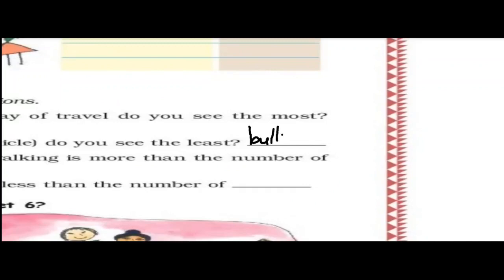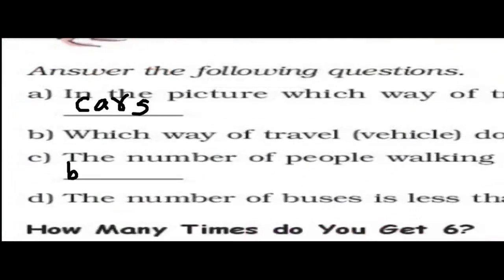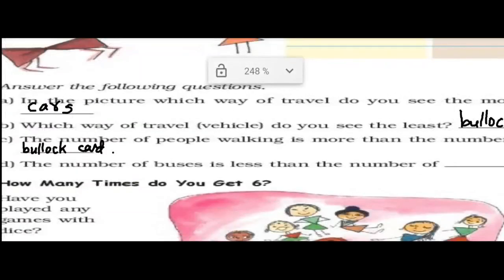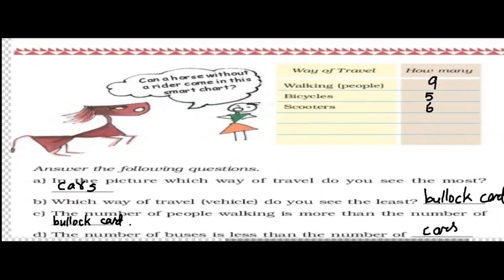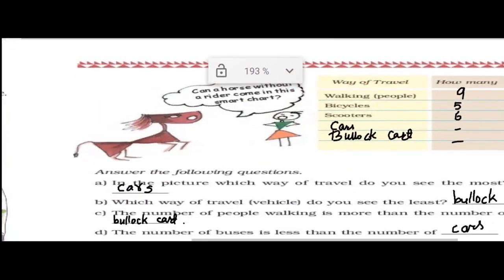Bullock cart. Next, the number of people walking is more than the number of bullock carts. The number of buses is less than the number of cars, because most of the people are traveling by cars. For your home assignment, you can count other modes of transport — like cars or vehicles — write the count of vehicles and the number of bullock carts, and the people traveling in bullock carts.